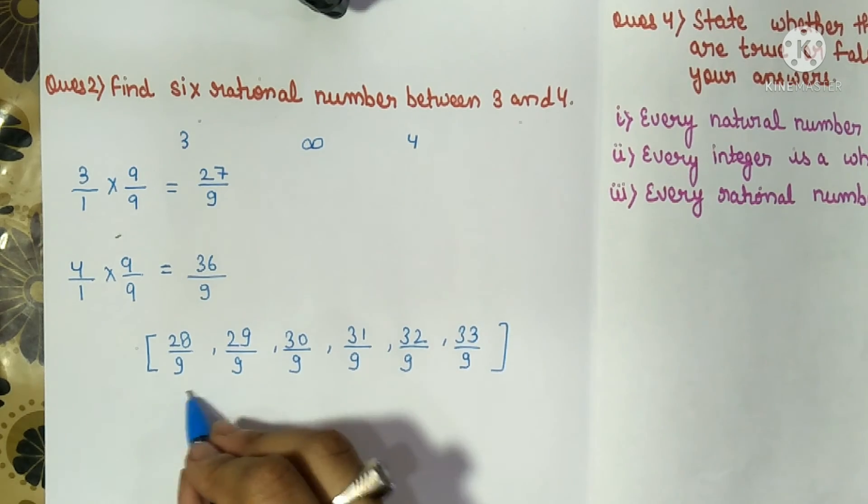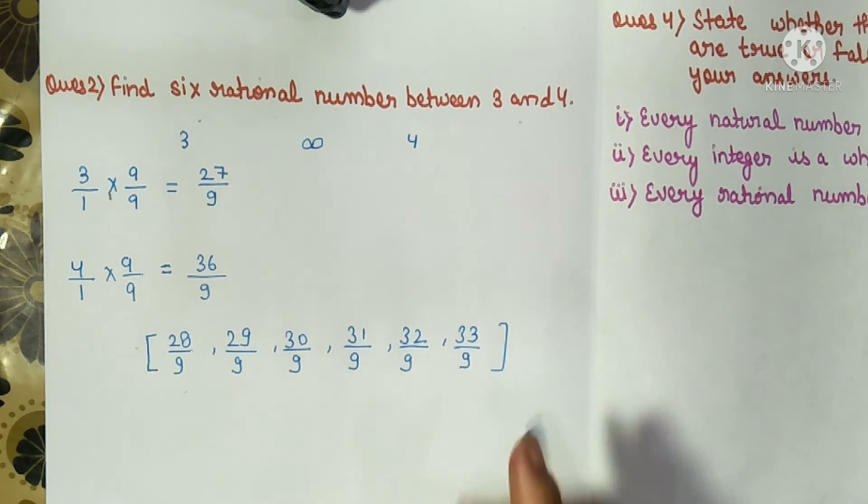See, we easily found six rational numbers between three and four. The answer can vary because there are many rational numbers between them.